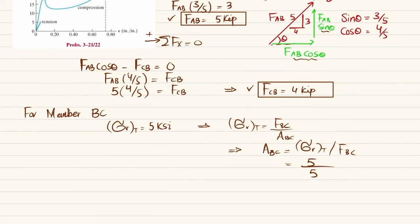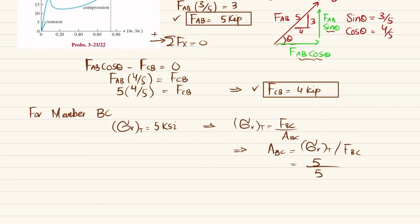So area of BC will be equal to FBC divided by rupture stress for tensile. So FBC is 4 divided by 5. So when you calculate it, area of BC will come out to be 0.8 square inches.